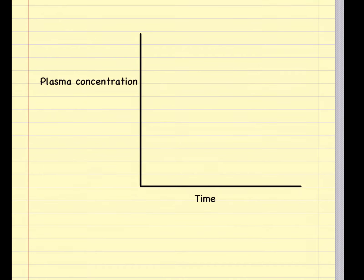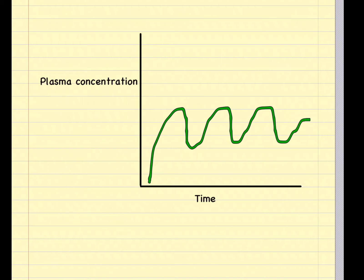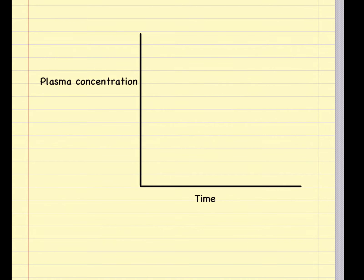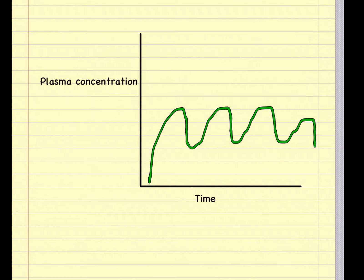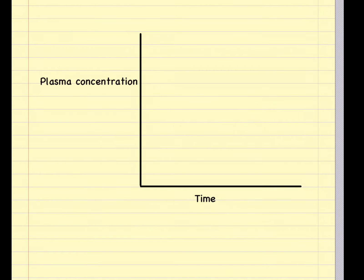Because the body immediately begins to break the drug down and excrete the drug, the amount of drug available to the target tissue quickly becomes less and less over time. So a drug must be given repeatedly in order to keep drug levels up and maintain concentrations at a desirable level.